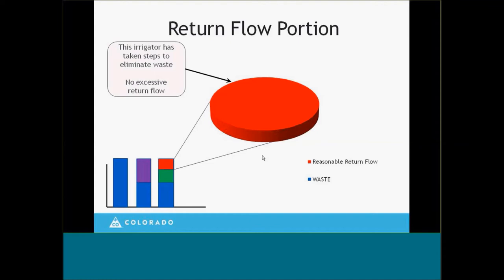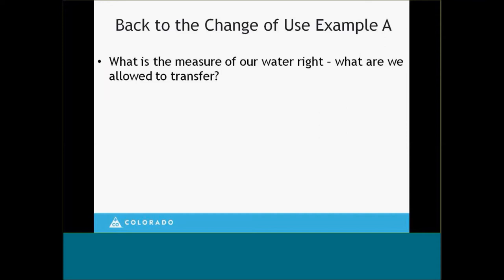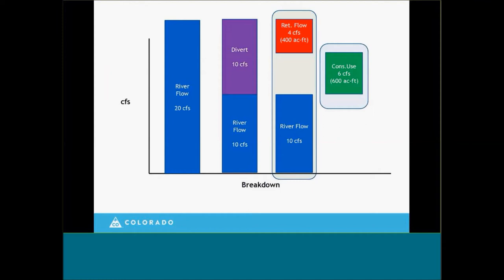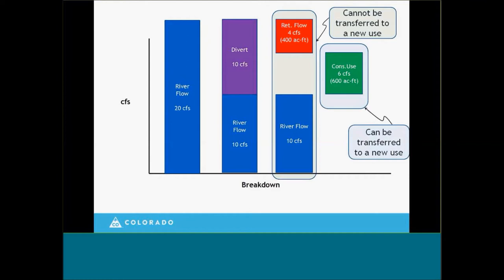Going back to our change of use example: what is the measure of our water right? Our consumptive use was 600 acre feet — that's the amount that can be transferred to a new use. The 400 acre feet cannot be transferred to a new use. In fact, we have an obligation to make sure that 400 acre feet continues to get back to the river at the same time, at the same location, and in the same amount, so that other water users are not impacted by the change.